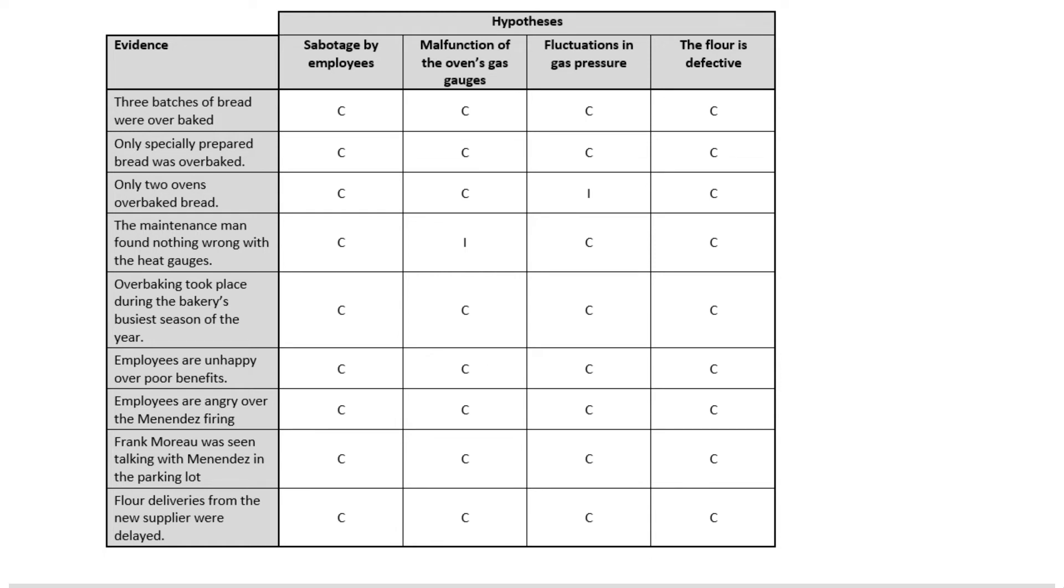So we can add in an additional hypothesis that's suggested by the data, we just need to go through and score that appropriately. Three batches of bread that are over baked, could the flour have accounted for that? Yes it could. Only specially prepared bread was over baked, could the flour have accounted for that? Yes it could. In fact we can go through the list and find that the defective flour can account for pretty much everything in the evidence that we have.